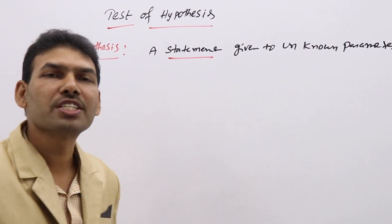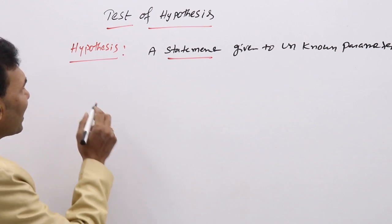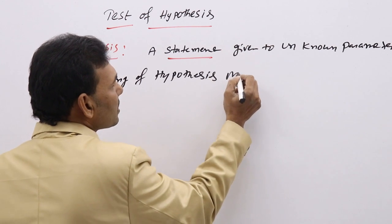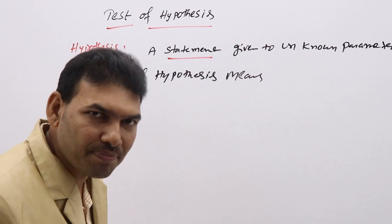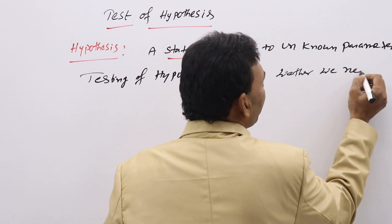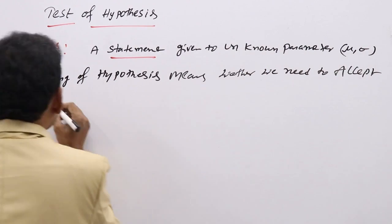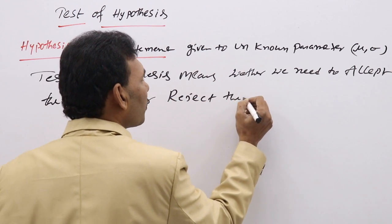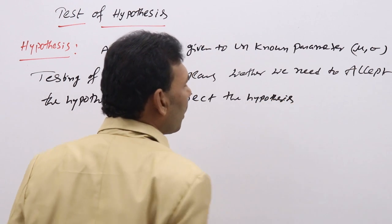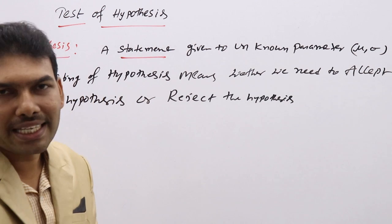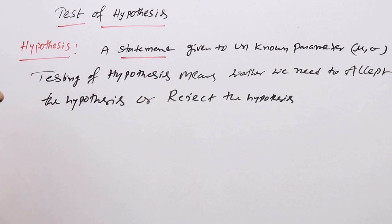If it is true, we will accept. If it is false, we will reject. So testing of hypothesis means whether we need to accept the hypothesis or reject the hypothesis. After testing the statement, at the end we will come to know whether to accept or reject — that procedure is called testing of hypothesis.